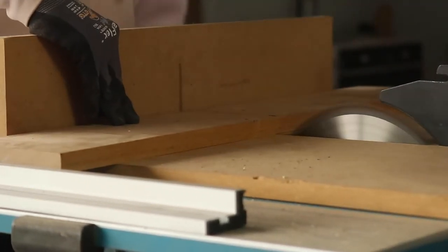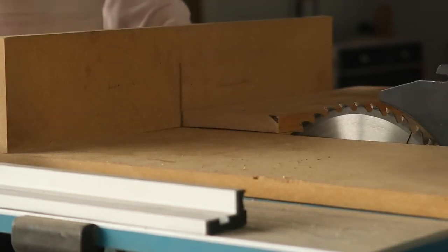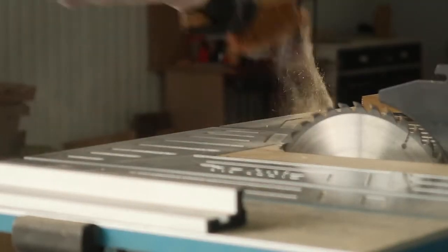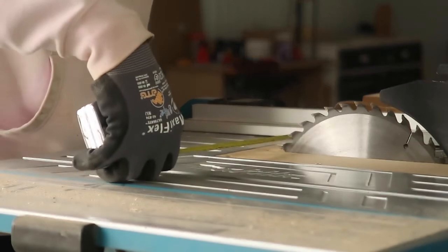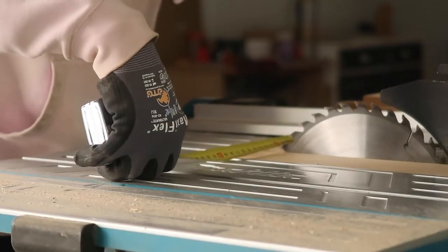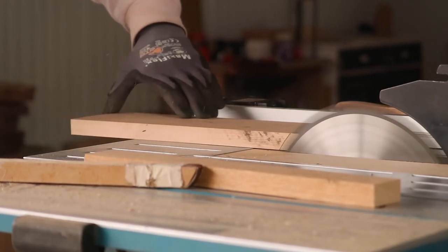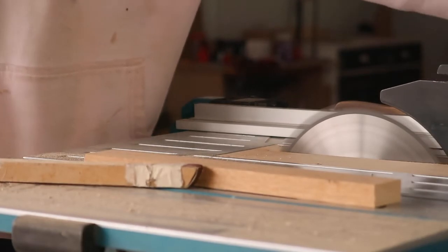Now that the board is cut to length, we also need to cut it to width. So we remove the crosscut sled, clean up the table a little bit, and then set our fence to the right width. I make multiple cuts. Here you can see me cutting up the width of the board.